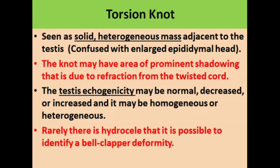The torsion knot is seen as a solid heterogeneous mass adjacent to the testis. Sometimes it is confused with an enlarged epididymal head. The knot may have areas of prominent shadowing.